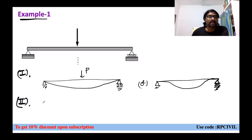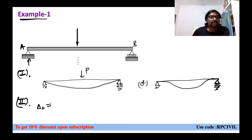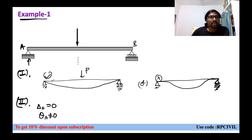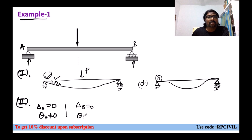At point A, there is a hinged support. Because of vertical loading, only vertical reaction is there, so vertical deflection will be zero. But there is no moment reaction, meaning rotation is not zero. So the first curve (where rotation is present, theta A ≠ 0) is valid here. At B, which is a roller support, only vertical reaction is there so vertical deflection delta B is zero, but moment reaction is not there, so rotation is not zero. Therefore the first diagram is correct.